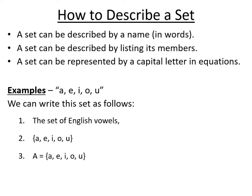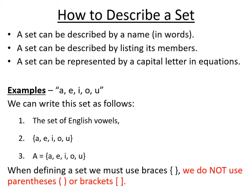And we can write this set in three ways. We can write it out as the set of English vowels — A, E, I, O, U. We can write it out in the second form, where we use a set of braces — those curly brackets. We do not use parentheses or square brackets. And the other option we have is to make it equal to a letter, so that everyone knows when we use that letter, we mean that set.